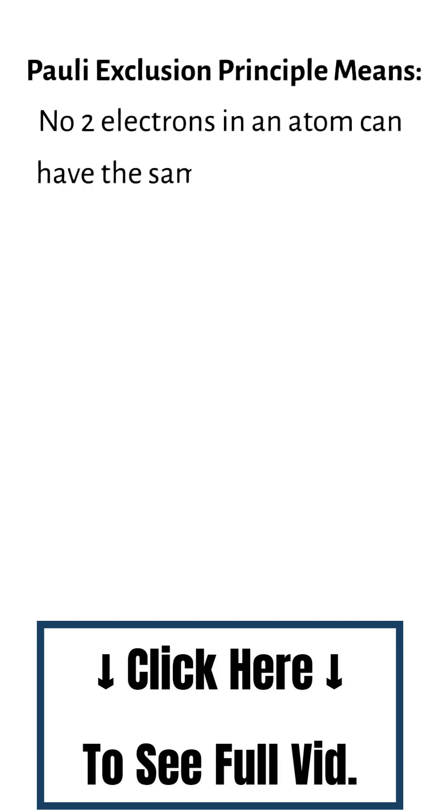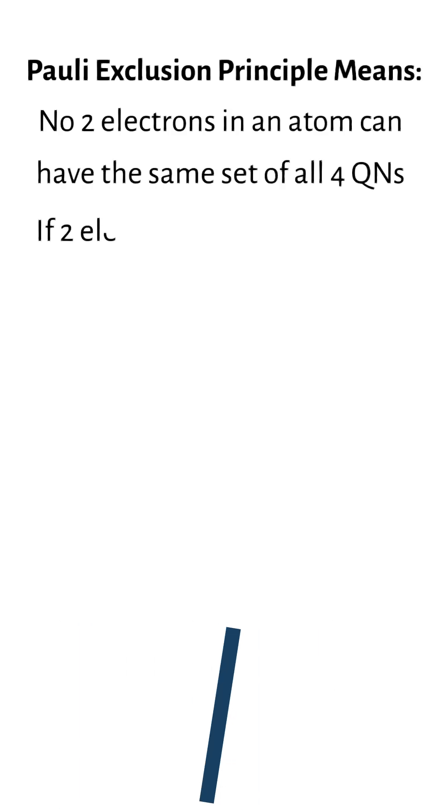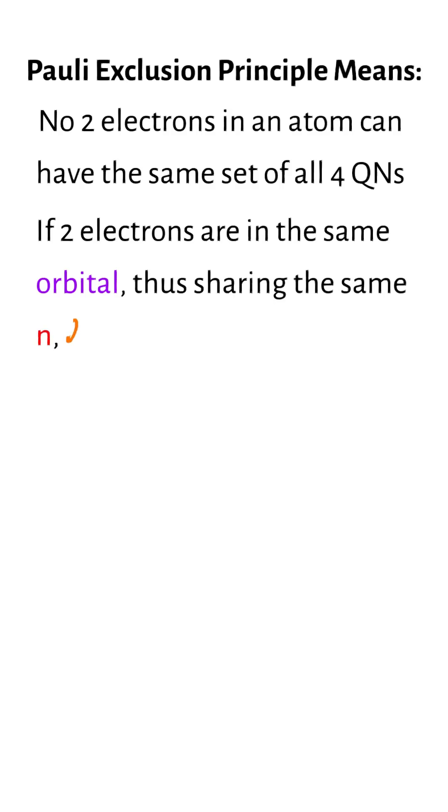This means that no two electrons in an atom can have the same set of all four quantum numbers. If two electrons are in the same orbital, thus sharing the same n, l, and m sub l, they must have opposite spins, m sub s, to satisfy the principle.